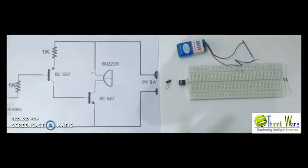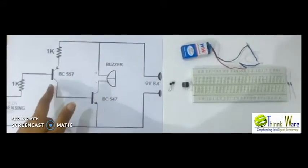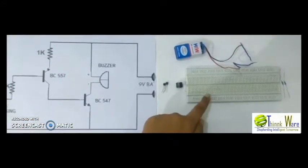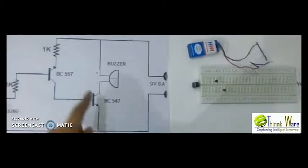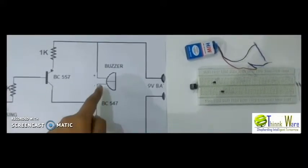Rain detector using transistors BC557 and BC547. Now we will connect these two transistors on the breadboard. After putting them on the breadboard, let us do the connections. BC547 collector is connected to the negative terminal of the buzzer.